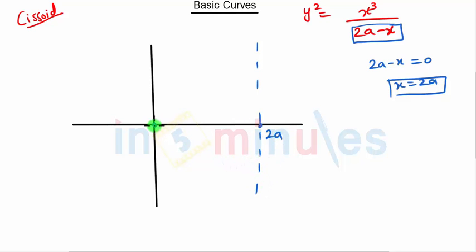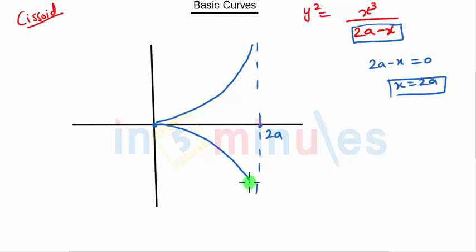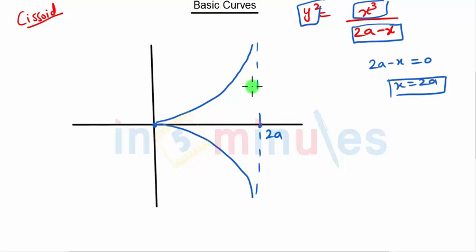The curve starts from the origin and extends toward the asymptote at x = 2a. Since we have y² and x³, the curve is symmetric about the x-axis. Remember the four rules I taught you and you can draw any curve.